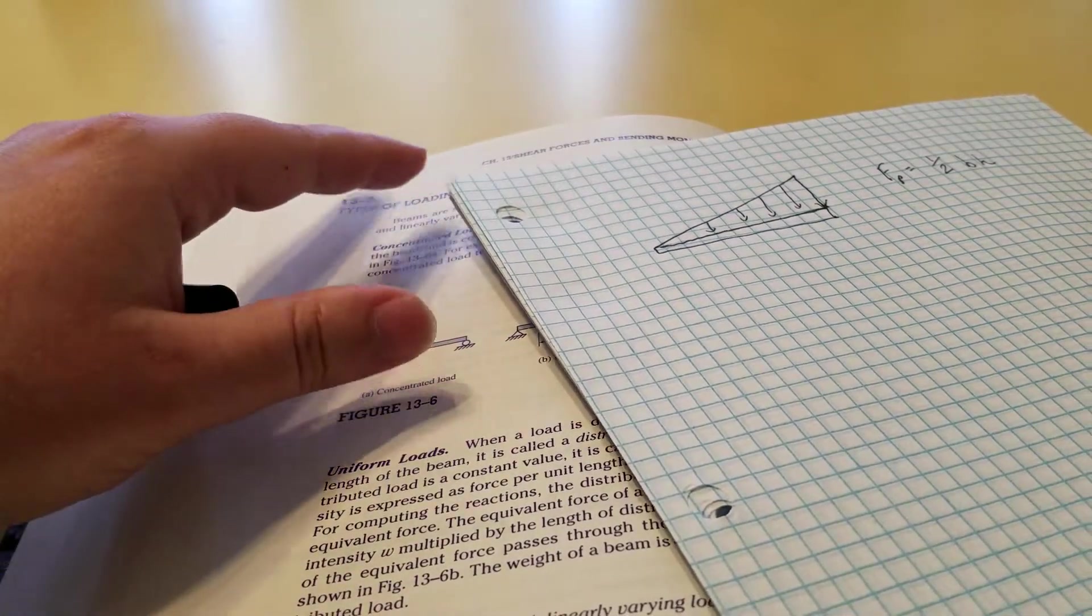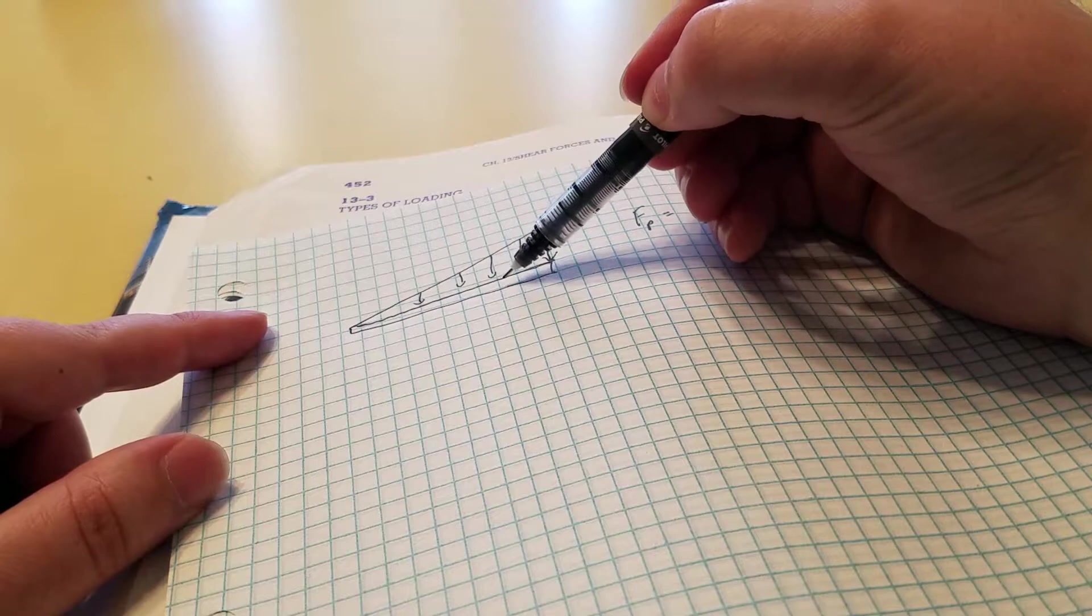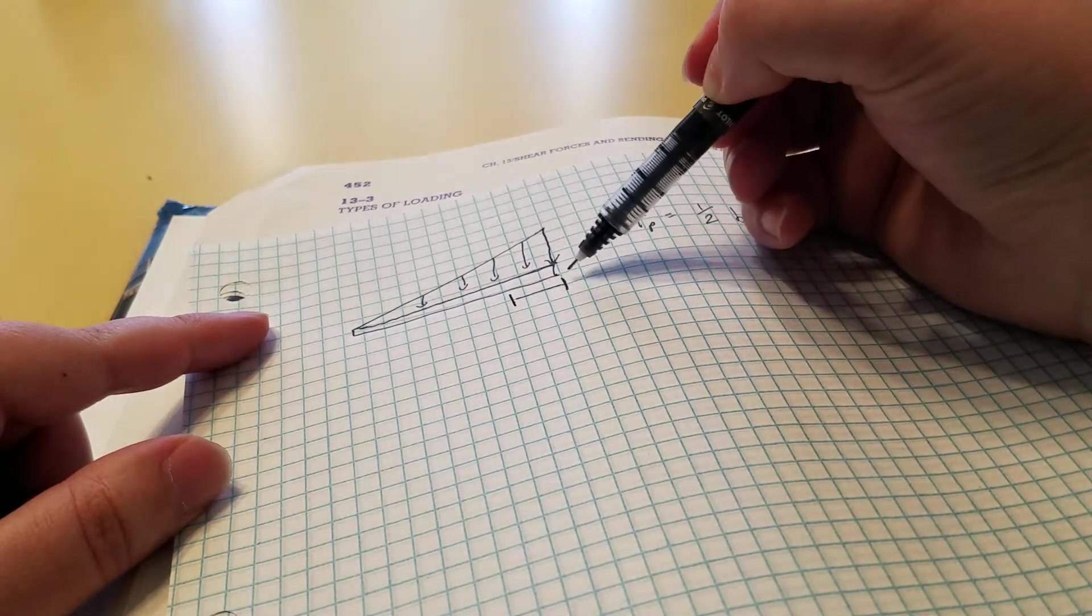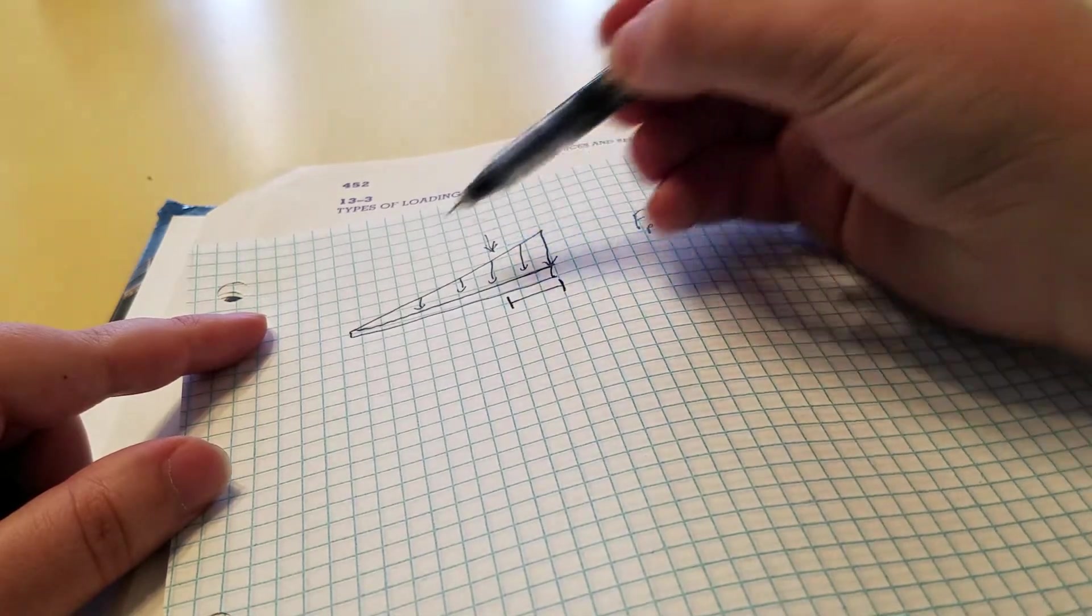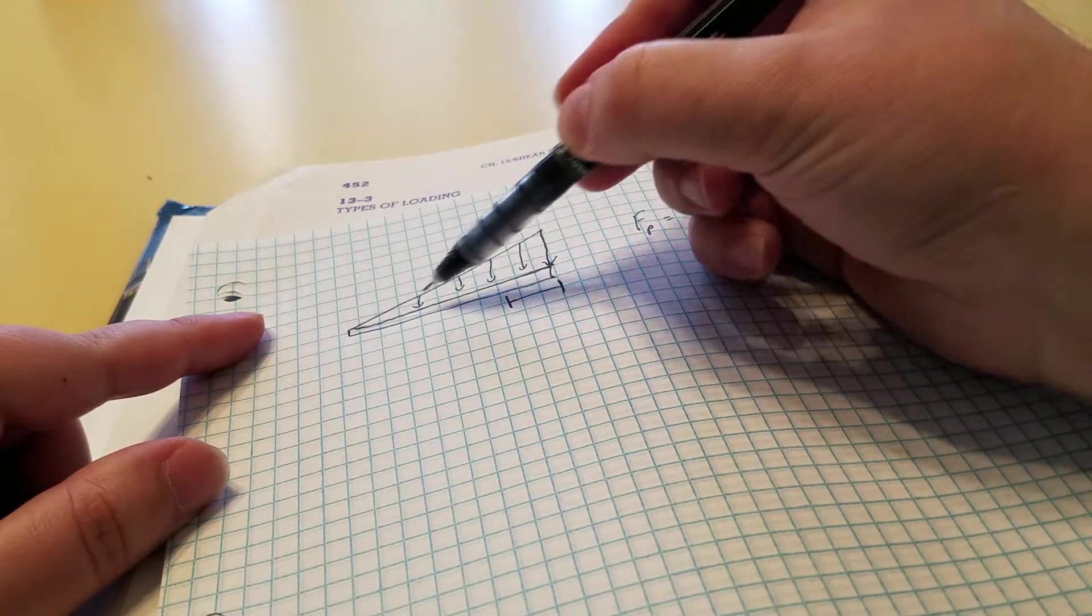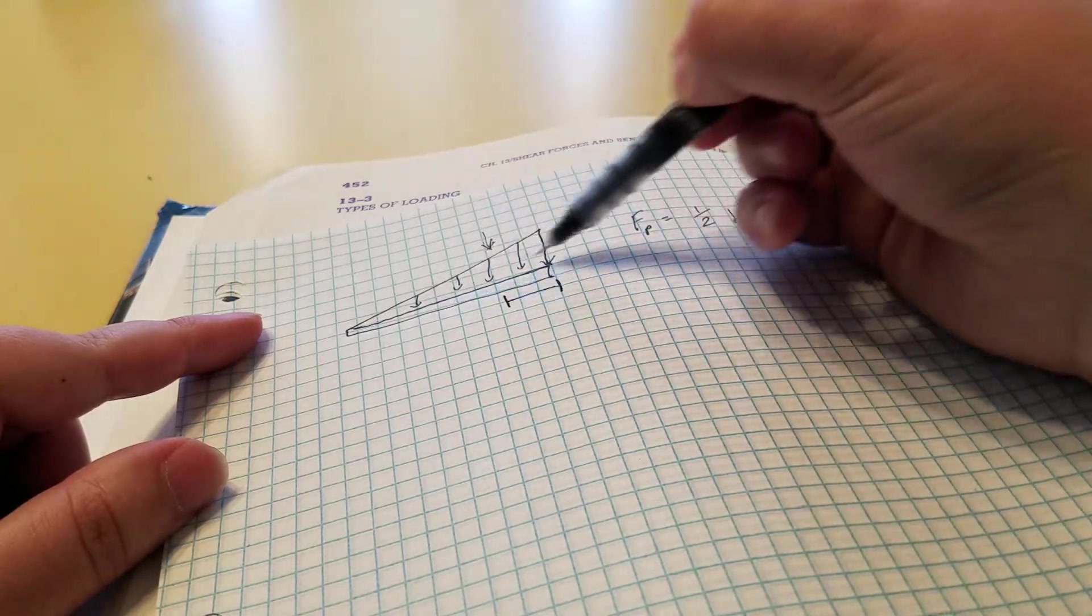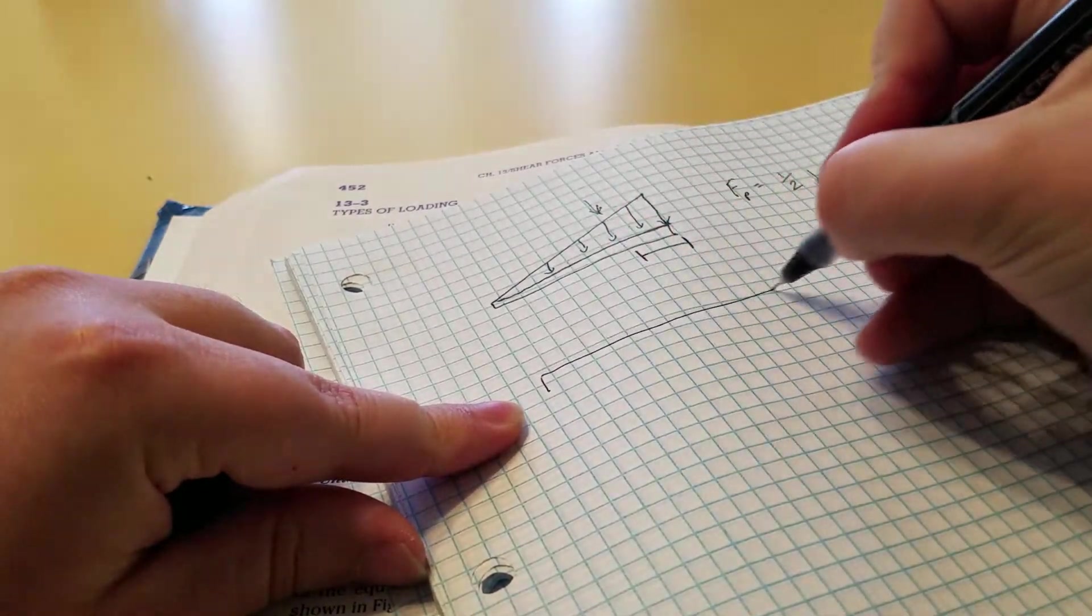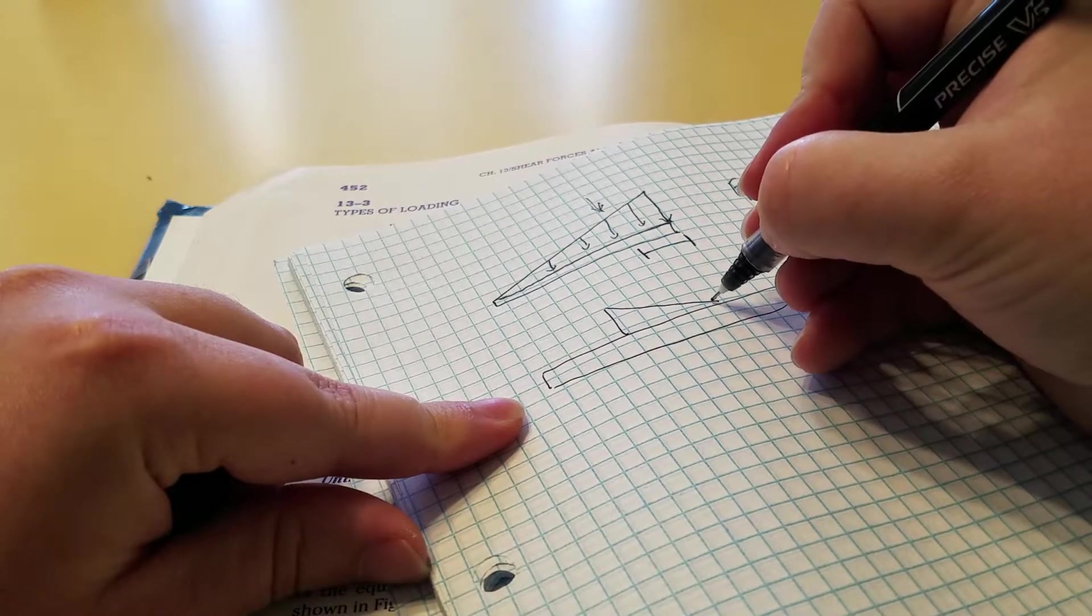Its location will be one-third of the triangle's length. It'll be located one-third over from the base. So if your triangle was like this—this would be your base and this would be your height.